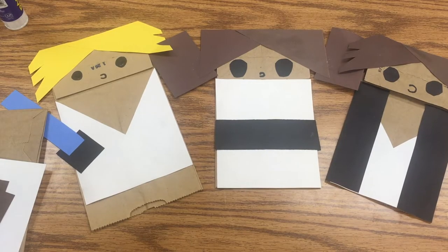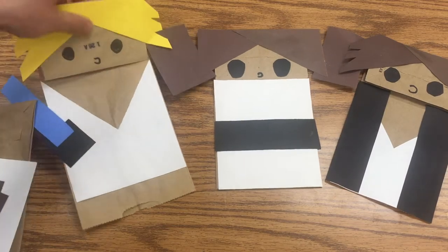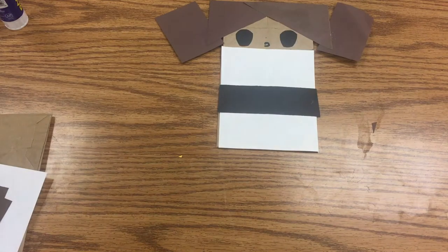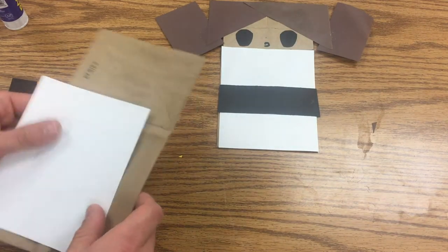Hey everybody, we're gonna make some Star Wars puppets. Today we're starting off with Princess Leia with her classic white robe and the little buns on the side.